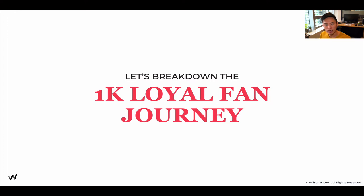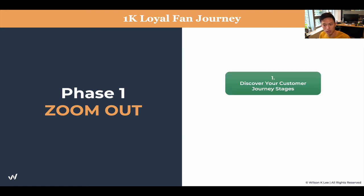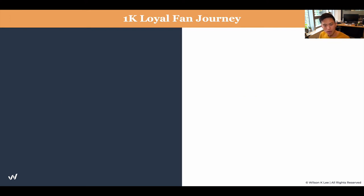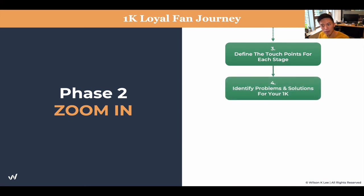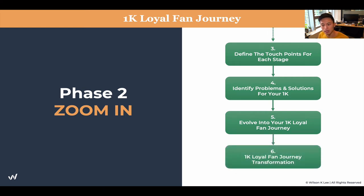Let's begin by breaking down the 1K loyal fan journey by identifying each of the touch points. We're breaking this into two phases. Phase one, covered in this lesson, is to discover your customer journey stages and define the goal customers want to achieve at each stage. In the next lesson, we'll zoom in by defining the touch points for each stage, identifying problems and solutions for the 1K journey, evolving your loyal fan journey, and discussing the transformation.